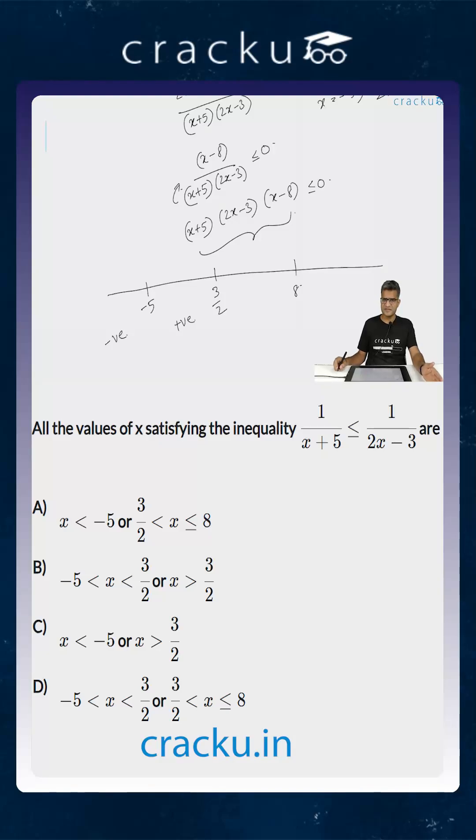If x lies between 3/2 and 8, x+5 is positive, 2x-3 is positive, only x-8 is negative, so the overall product will be negative.